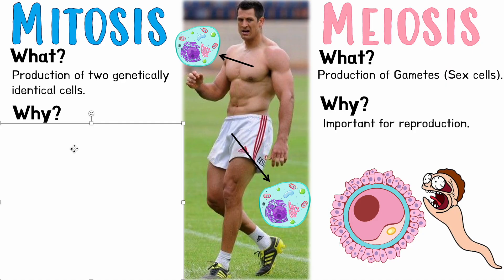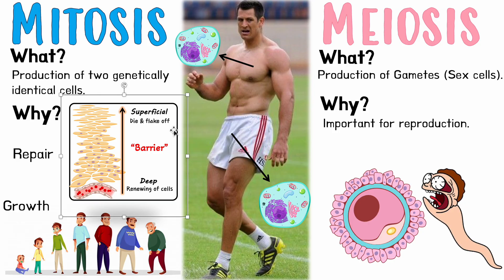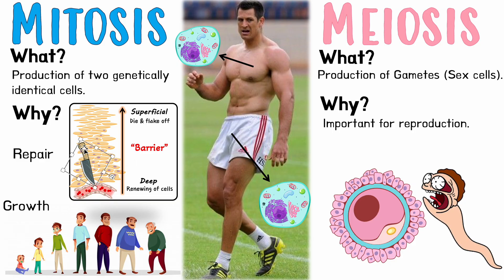For mitosis, there are two very broad categories: repair and growth. Repair is straightforward — let's take your skin as an example. You've got many layers of skin, so the top part is your superficial layer closest to the outside. As we go deeper through your skin there are many layers, and eventually we get to little blood vessels. If you get stabbed — say while making a brownie — you go all the way through and hit a blood vessel, you'll bleed.